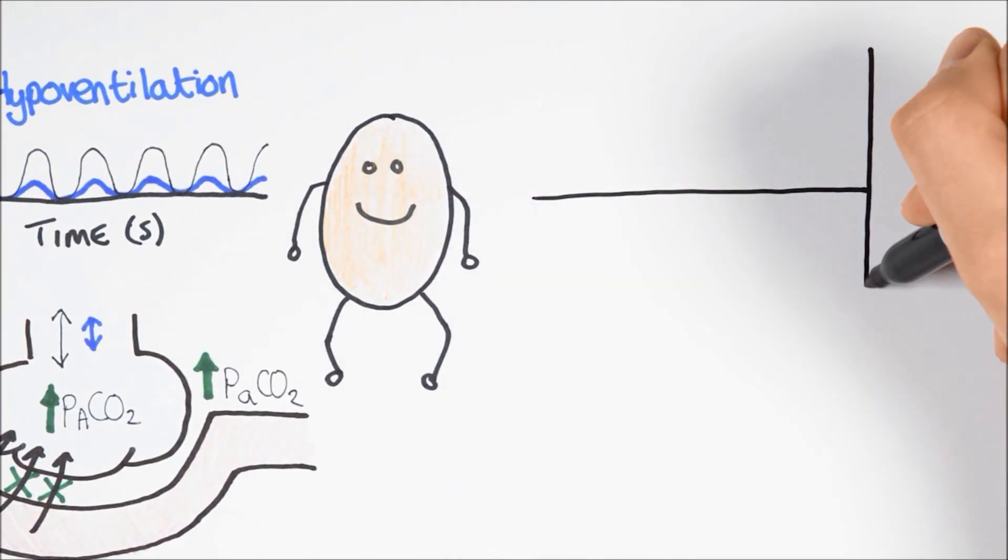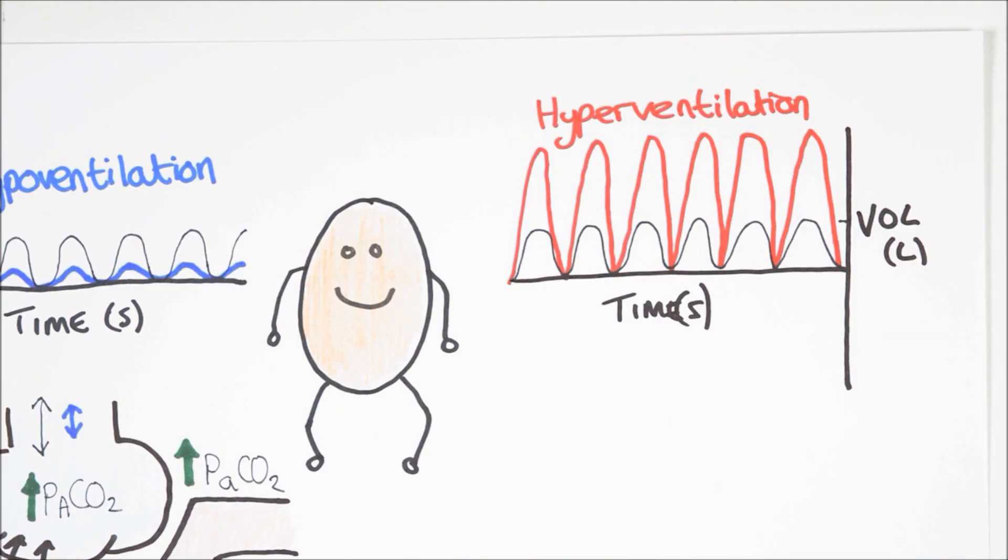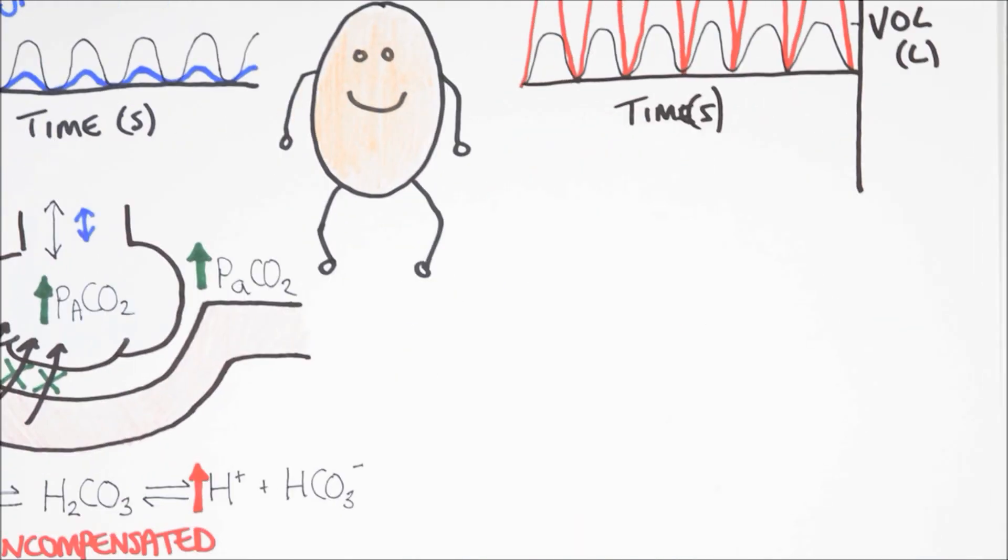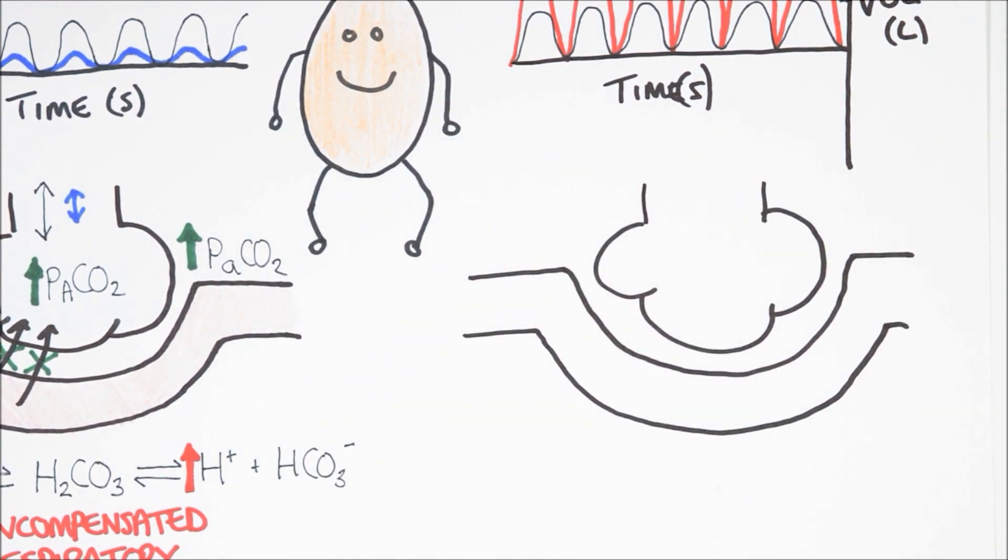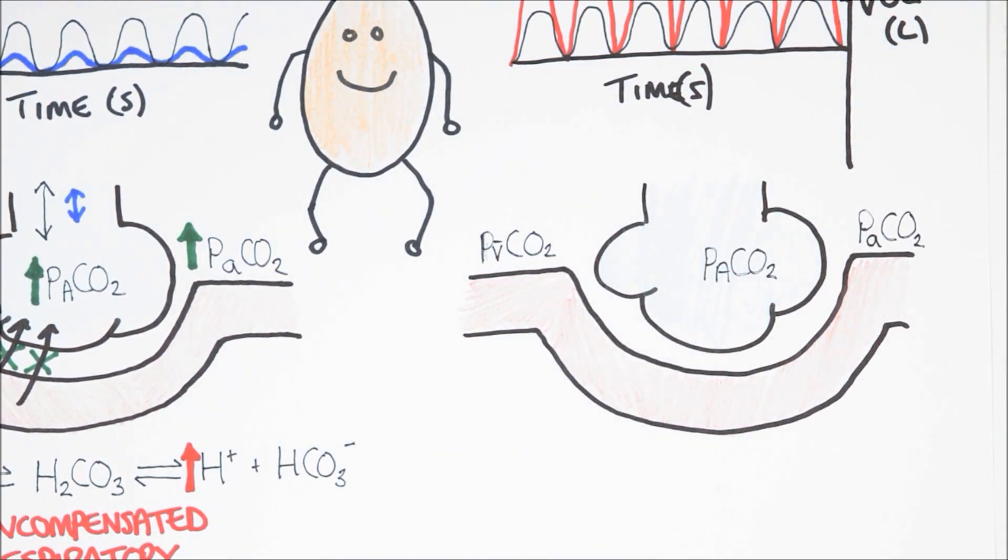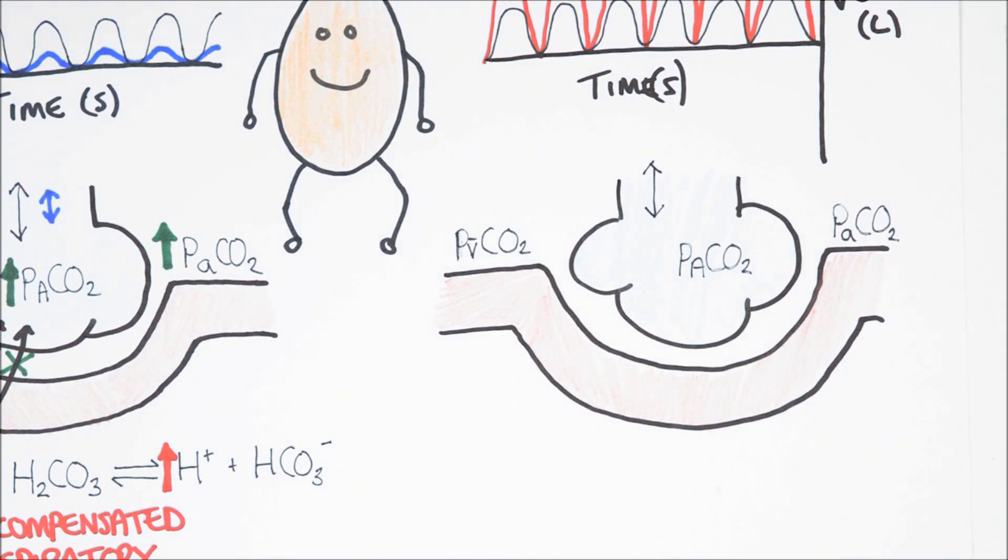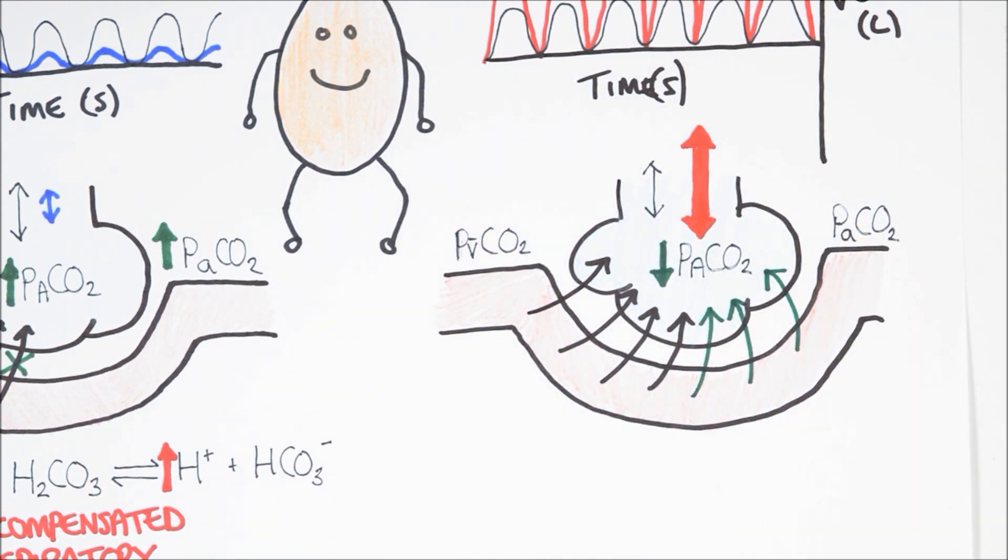We can also inspect what happens if an individual were to hyperventilate. The increased tidal ventilation with the same breathing frequency will massively increase the minute ventilation. This will also increase alveolar ventilation and increase the amount of fresh air reaching the respiratory membrane. This will cause a reduction in alveolar PCO2 and an increase in the concentration gradient for diffusion.